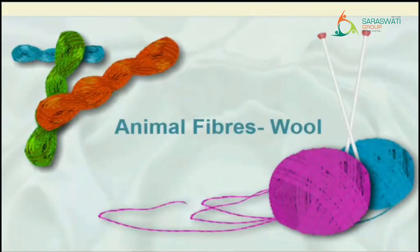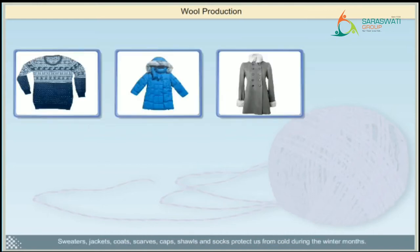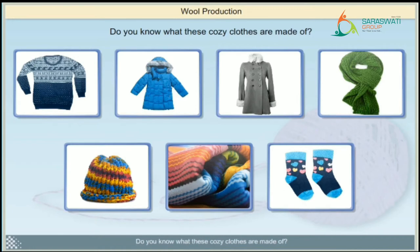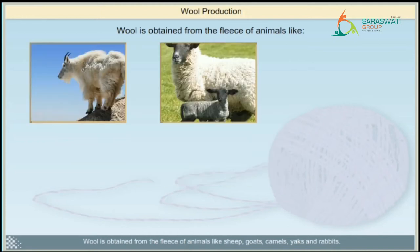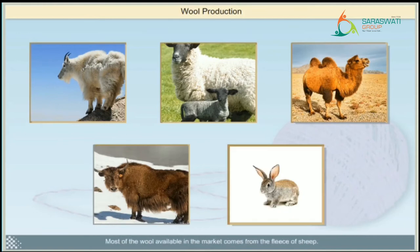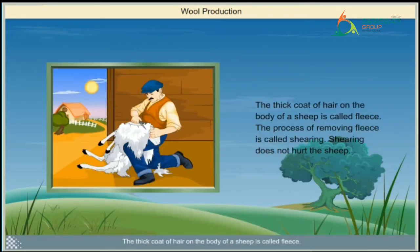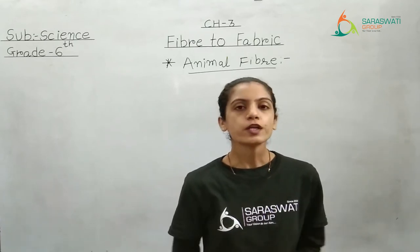Animal Fibers. What protects you during the cold winter months? Sweaters, jackets, coats, scarves, caps, shawls and socks protect us from cold during the winter months. Do you know what these cozy clothes are made of? They are made of wool. Wool is obtained from the fleece of animals like sheep, goats, camels, yaks and rabbits. Most of the wool available in the market comes from the fleece of sheep. The thick coat of hair on the body of a sheep is called fleece. The process of removing fleece is called shearing. Shearing does not hurt the sheep. As we have continued watching this video, we are going to start with the next one — the next fiber which we get from the animal, which is silk.